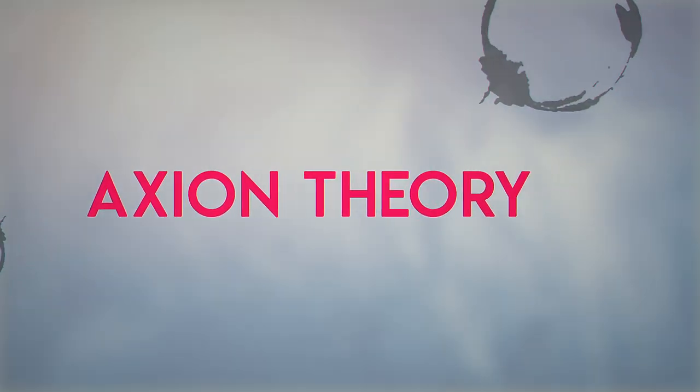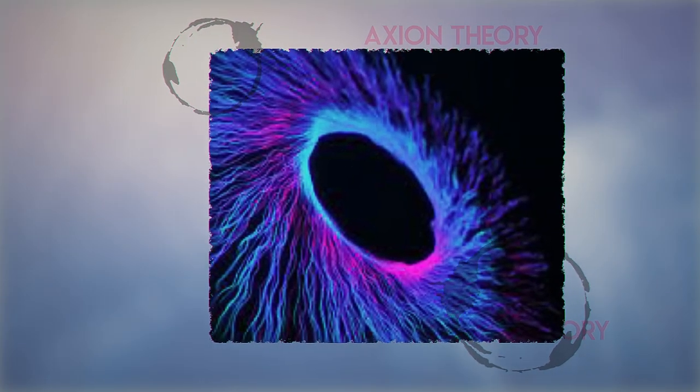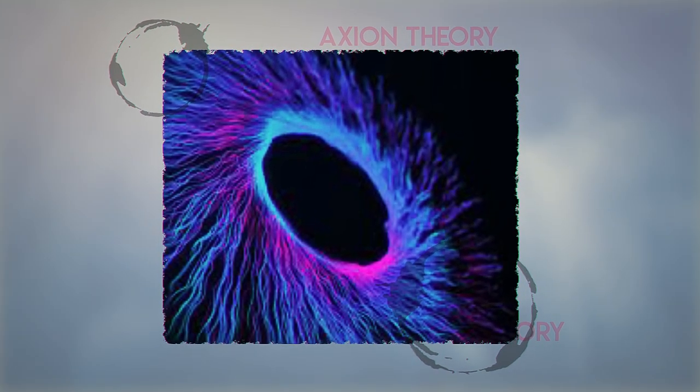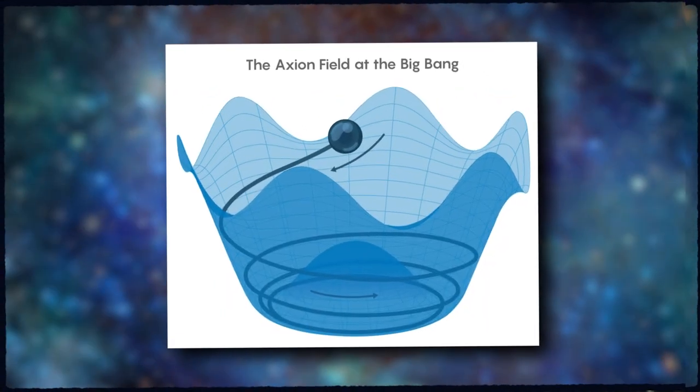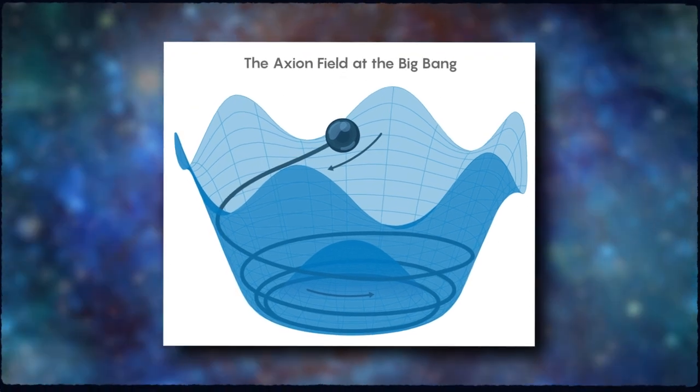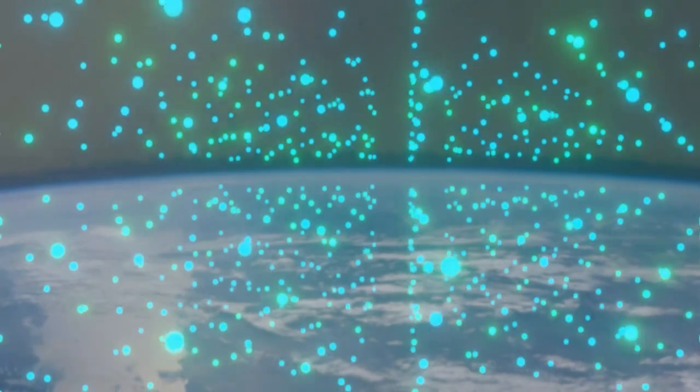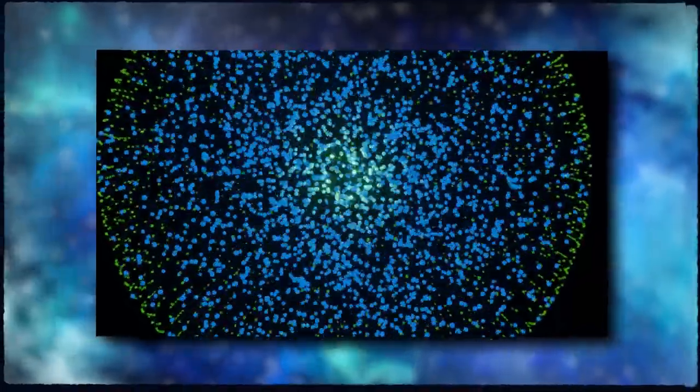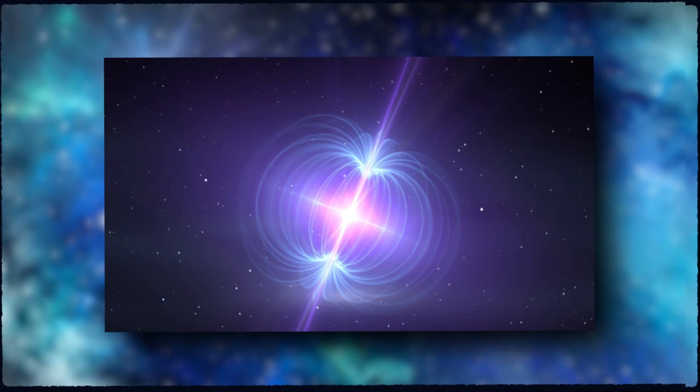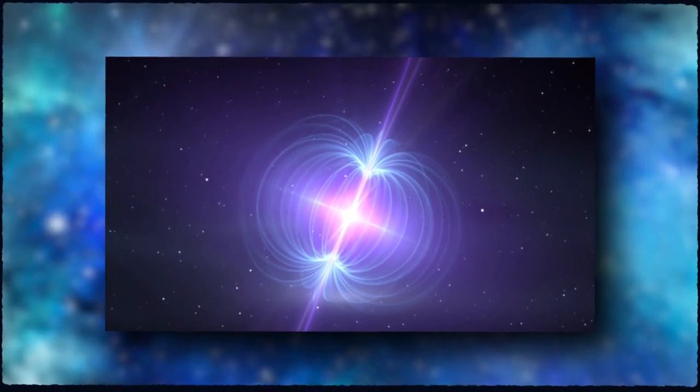Axion theory. Now, let's shift our cosmic gaze to something called the axion theory. Picture something as elusive as a whisper in the wind, and you've got an axion. These theoretical particles are as light as a feather, a billion times lighter than an electron, or maybe even less. Spotting one is like trying to catch a breeze with your bare hands.